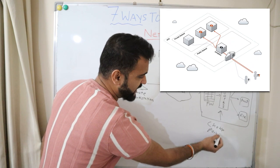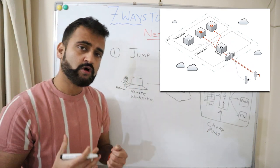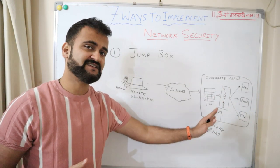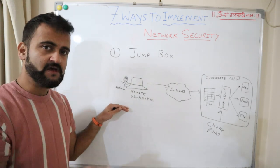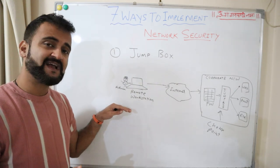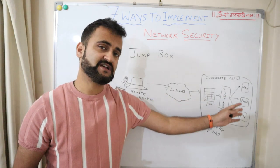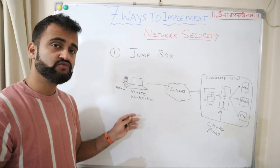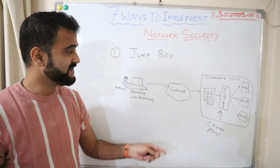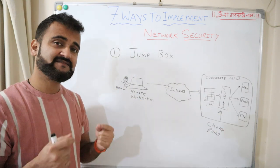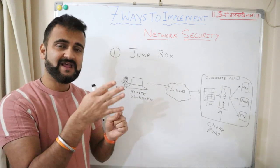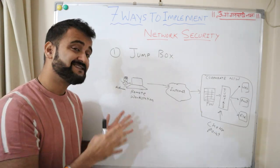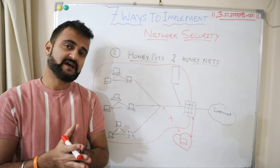The jump box server creates a choke point. If any hack or issue happens, you can keep auditing this particular jump box for any such activity, because you are creating that level of abstraction between the external client machines and your actual servers. Jump box servers are very heavily audited for any malicious activity. It's a simple and effective way to ensure separation between your external network and your internal network.